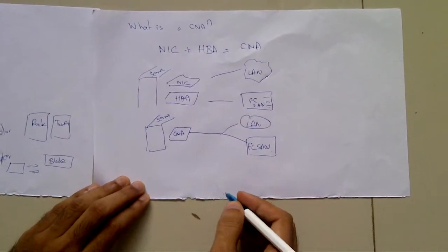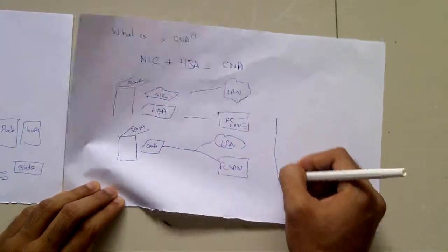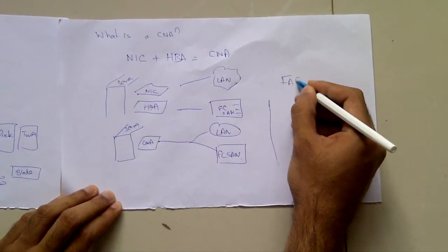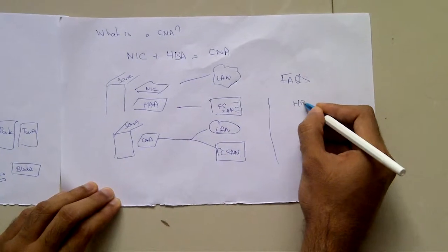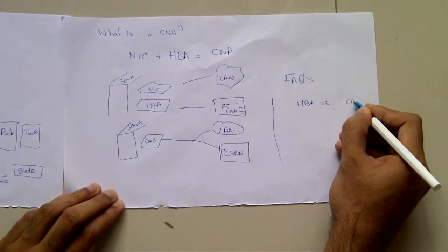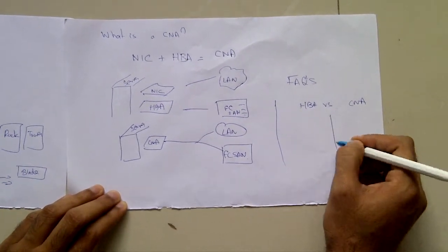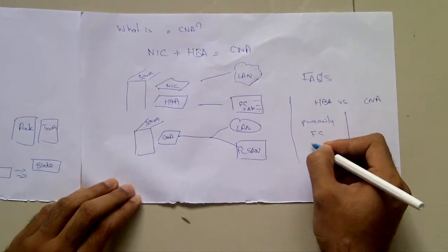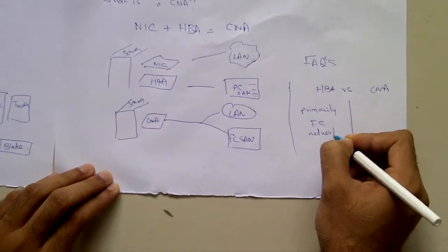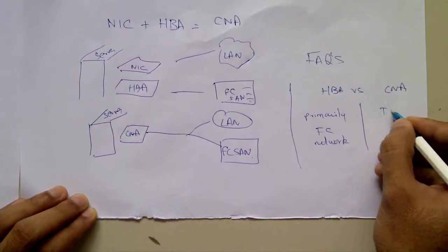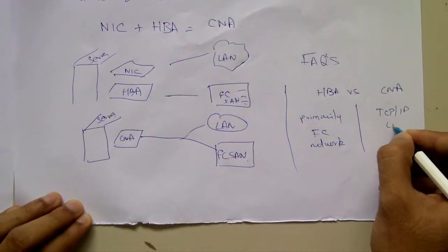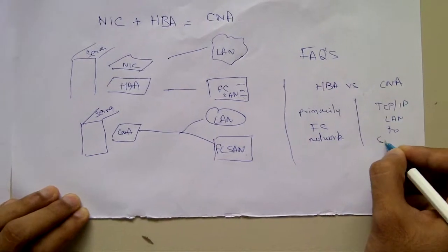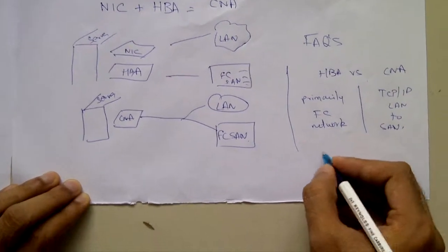FAQs: When is an HBA used and when is a CNA used? An HBA is used primarily in a fiber channel network while a CNA is used in a TCP IP LAN to SAN network.